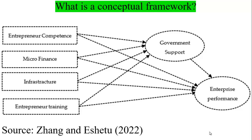A new concept to introduce here is the mediating variable. A mediating variable explains how the independent and dependent variables relate. For example, consider how entrepreneur competence affects enterprise performance given the existence of government support — in the presence of government support, how the performance of micro and small enterprises and entrepreneur competence are related.